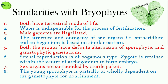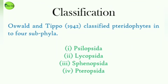In both groups, male gametes are flagellated. The structure and ontogeny of the sex organs of bryophytes and pteridophytes follow a similar pattern. Both groups show definite alternation of sporophytic and gametophytic generations. Their sexual reproduction is of the oogamous type, the zygote is retained within the venter of the archegonium to form the embryo, and the sex organs are surrounded by a sterile jacket. The young sporophyte is partially or wholly dependent on the gametophyte for nourishment.